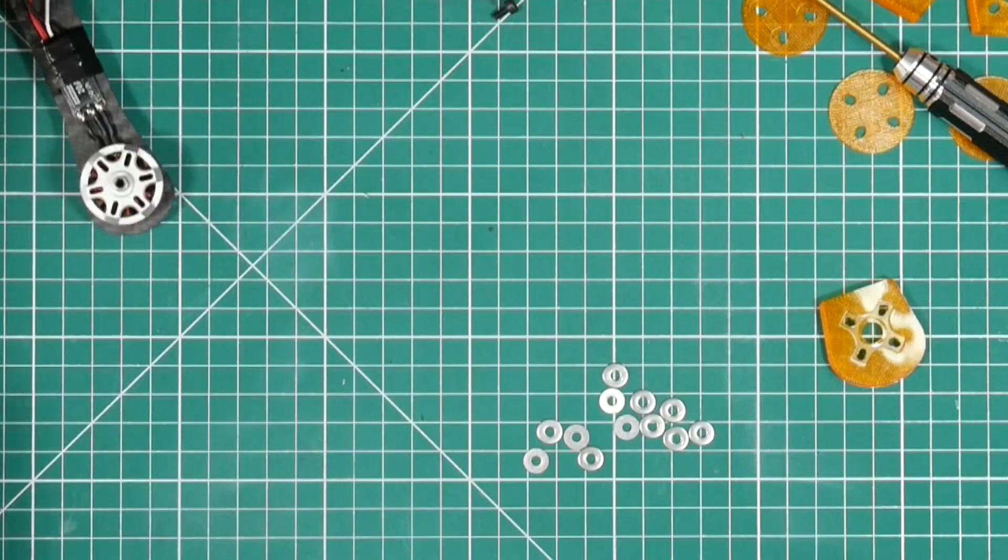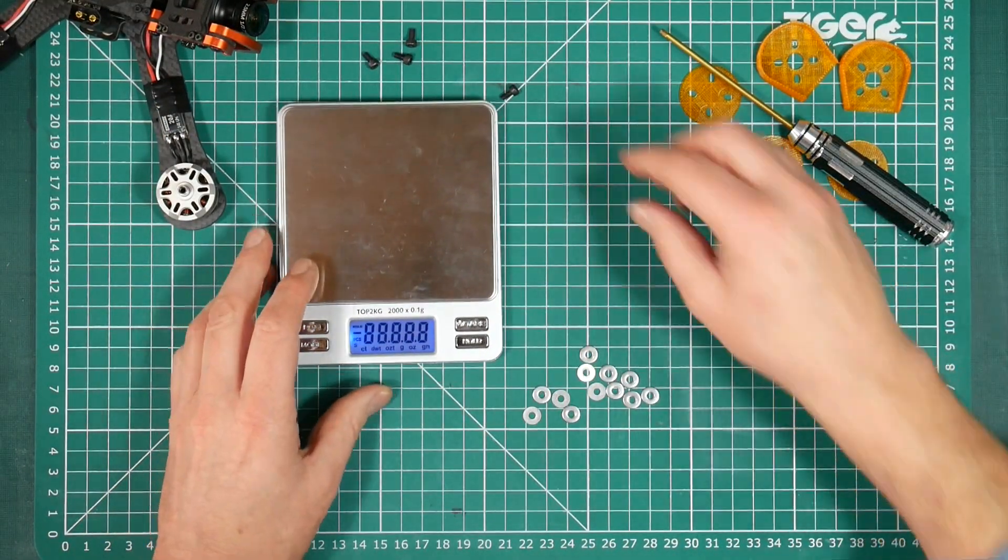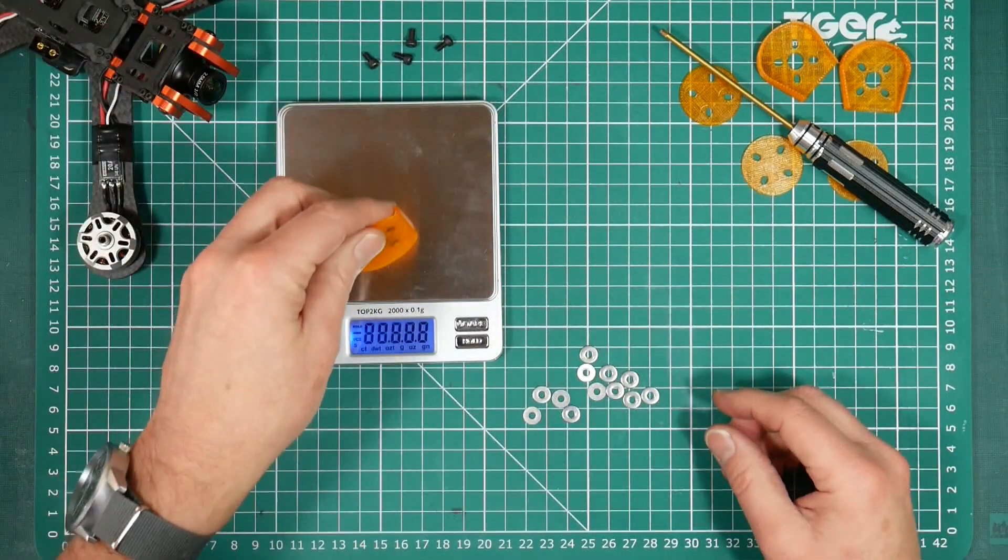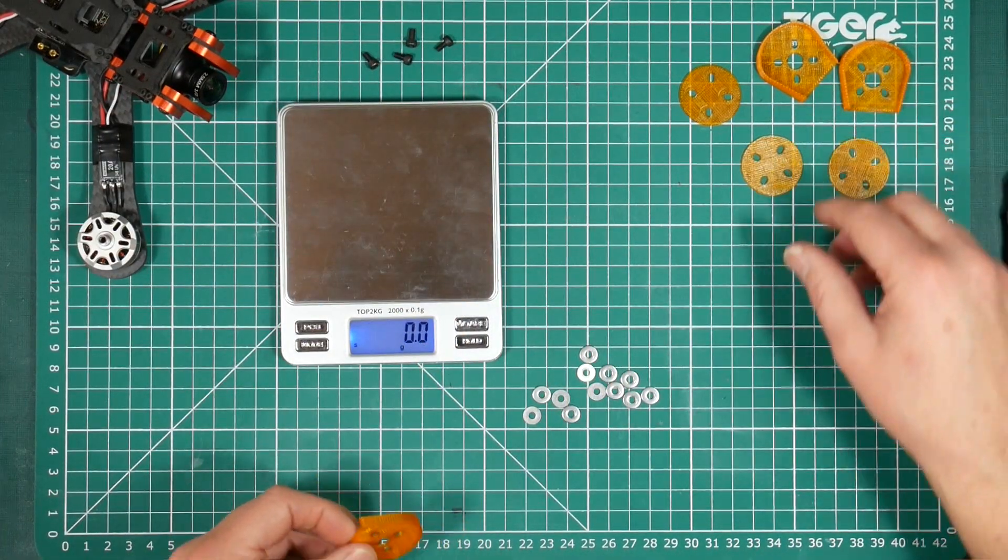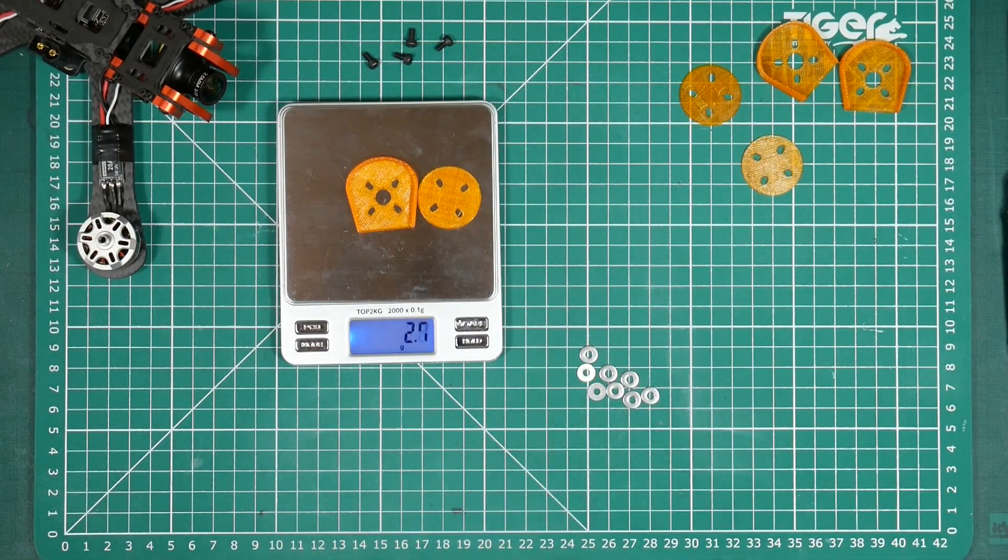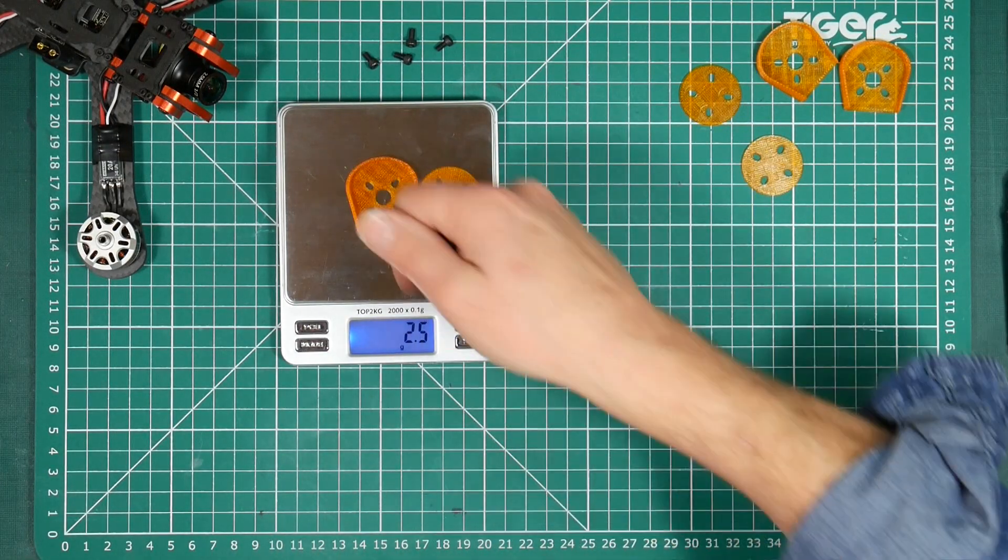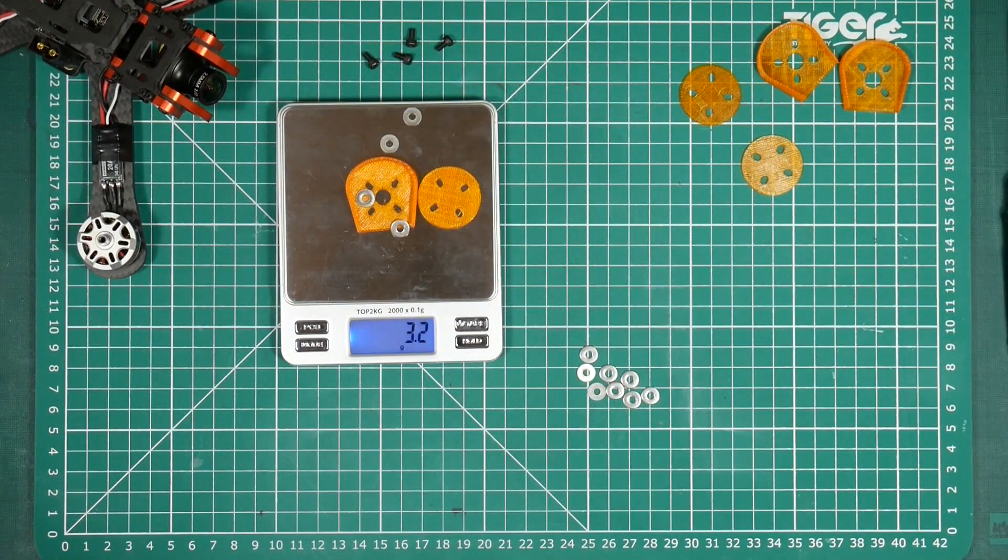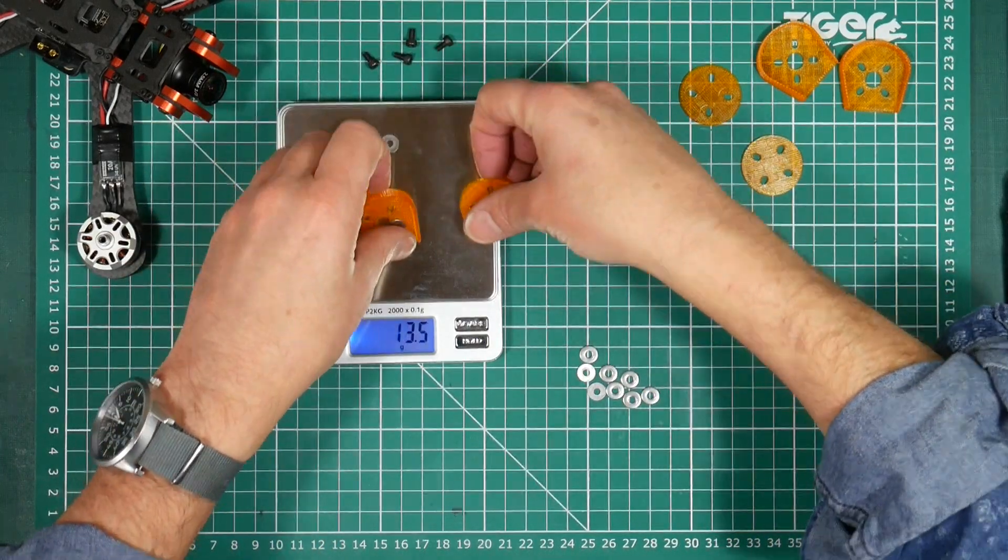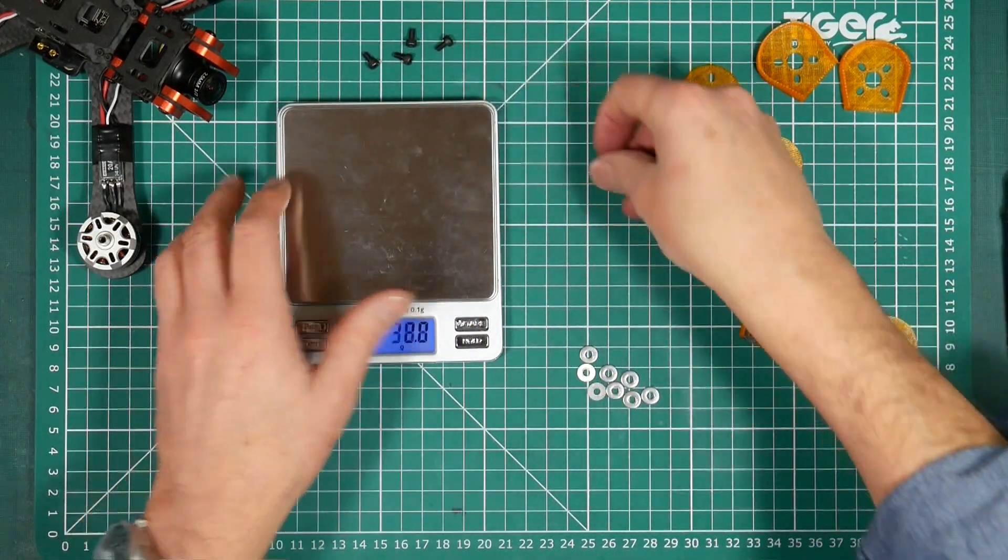So for those of you interested, just to quickly check what the additional weight of these is. I think it's about 3 grams that we had before, so that's what we need to include: the 4 washers, and obviously the bolts will be on there anyway. So 3.5 to 3.6 grams. It's not a huge amount, to be honest.